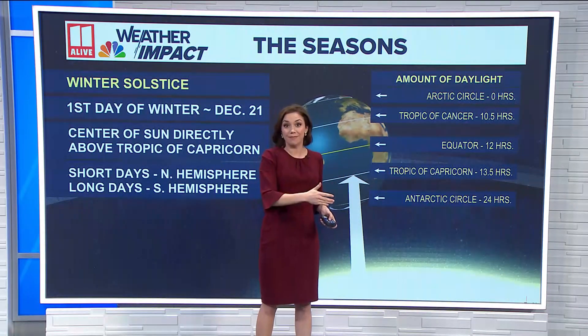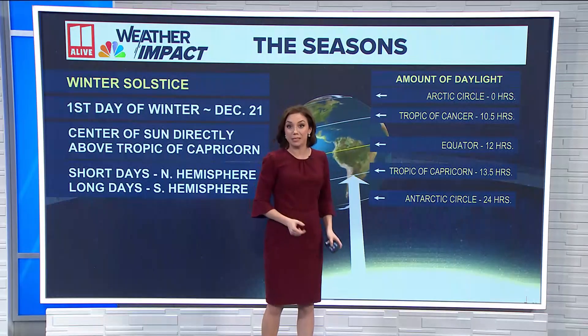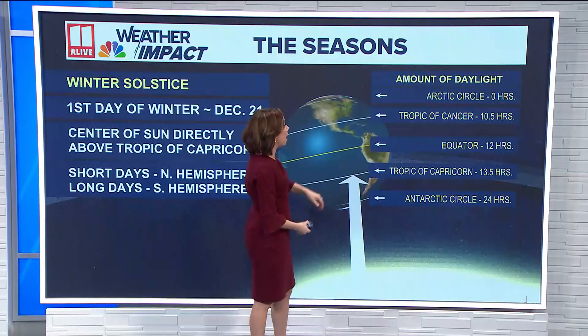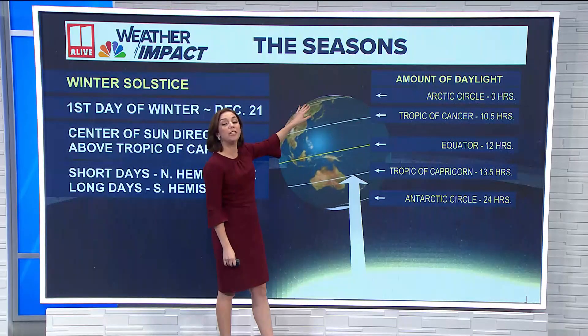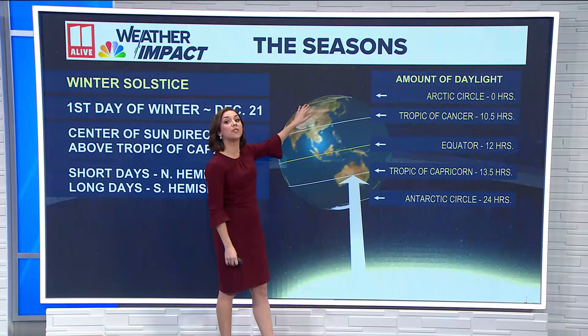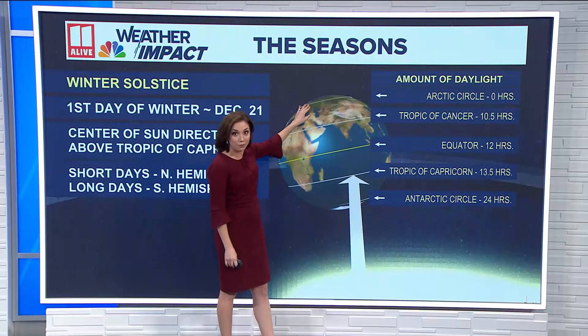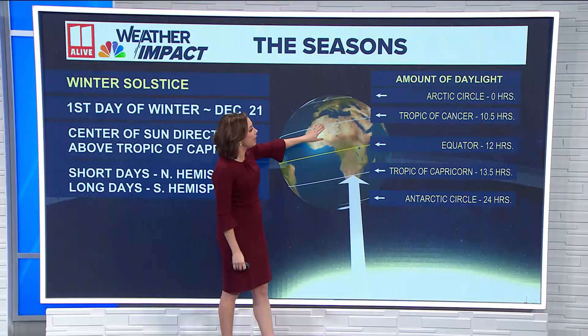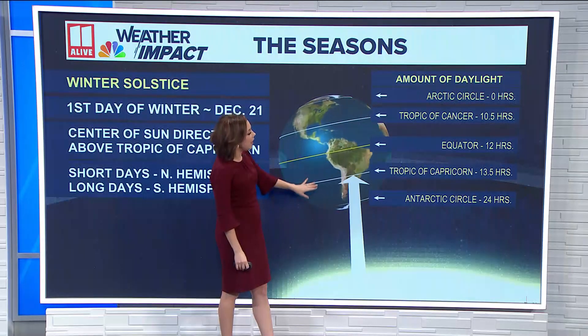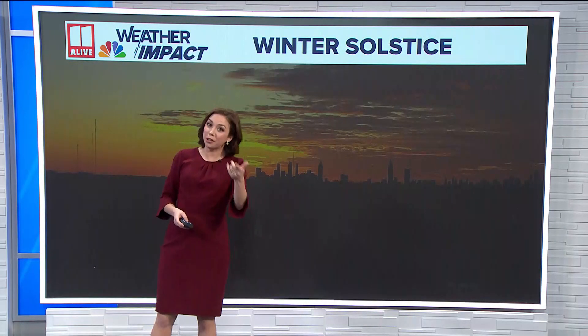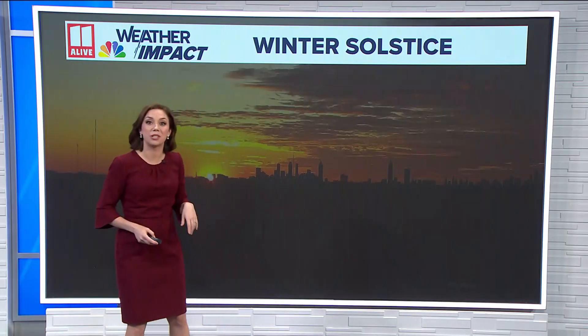The opposite happens from what happens during the summer solstice. Up in the Arctic Circle, instead of seeing 24 hours of daylight, they have 24 hours of darkness for several days in a row. The Tropic of Cancer gets just about 10 and a half hours of daylight. And then the opposite effect with the Antarctic Circle in the southern hemisphere having 24 hours of daylight while we're experiencing wintertime up here.